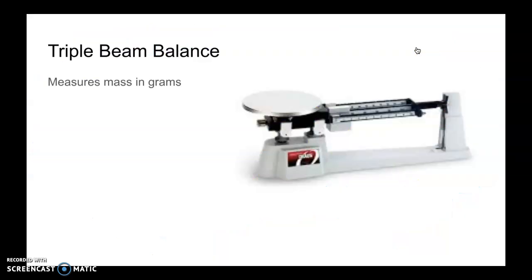The first tool is called the triple beam balance. Its function is to measure mass. It gets its name because you can see one, two, three beams. Three, triple. There are weights along each of the beams that you slide.